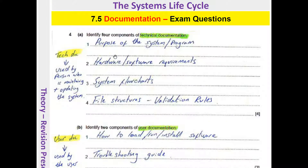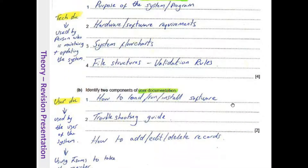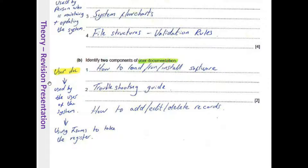Here are some typical exam questions. Four components of technical documentation — remember, this is used by the person maintaining and updating the system — include: the purpose of the system or program, hardware and software requirements, flowcharts, and file structures including validation rules. Two components of user documentation — used by those operating the system, such as a teacher doing a register — include: how to load and run the software, and a basic troubleshooting guide. A guide on how to add, edit, and delete records could also be included.